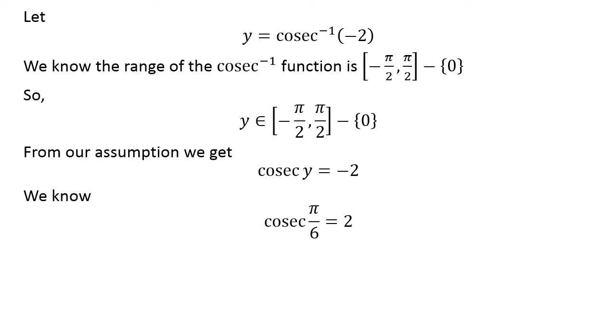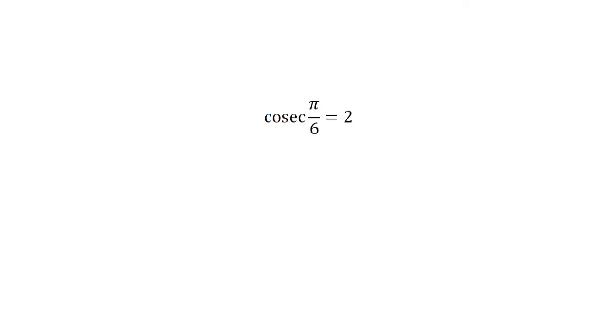We know cosec(π/6) = 2. We also know the identity cosec(-x) = -cosec(x).